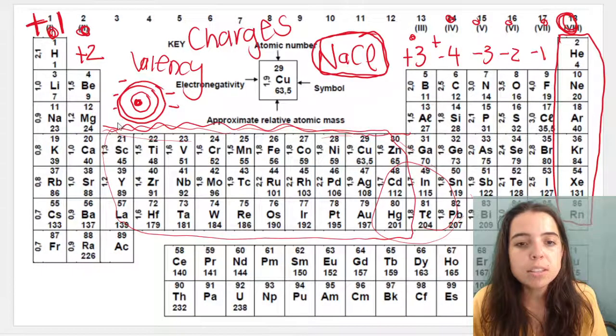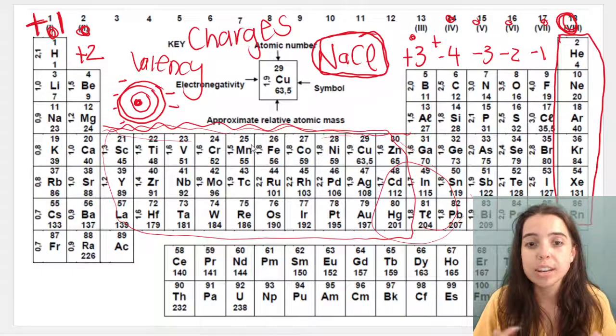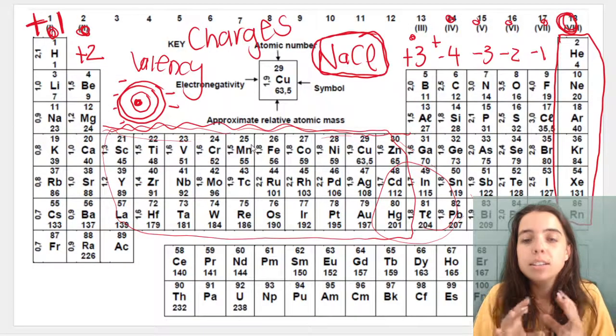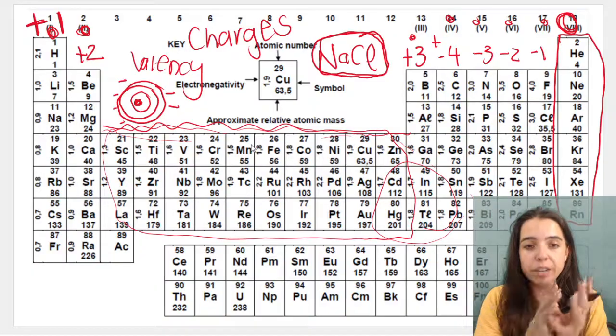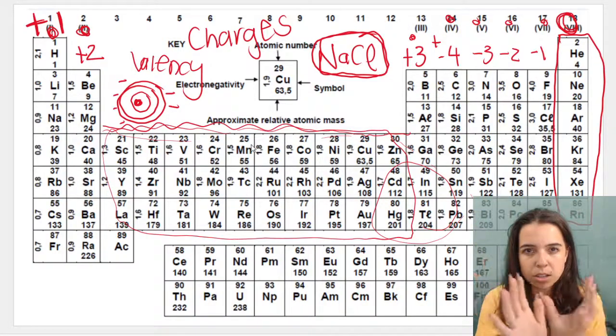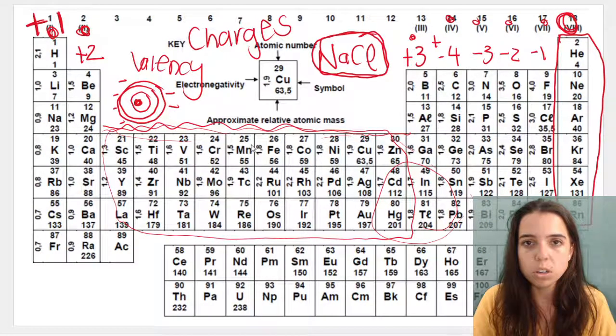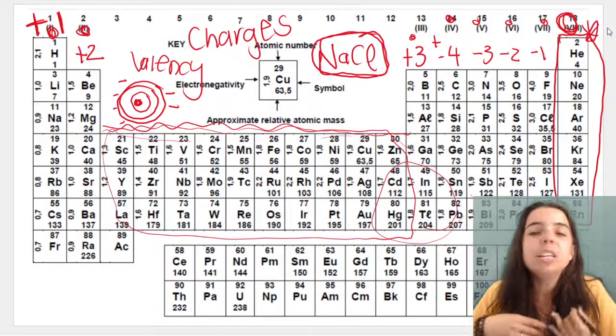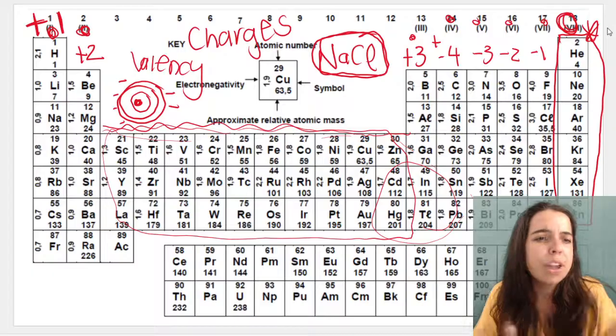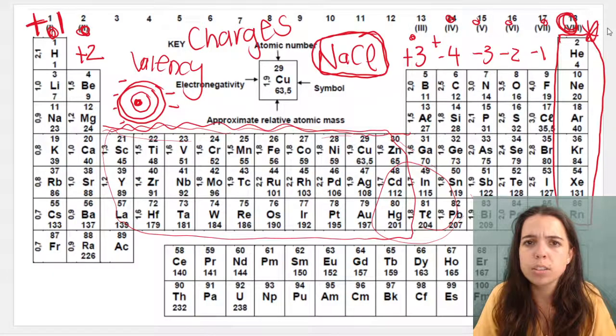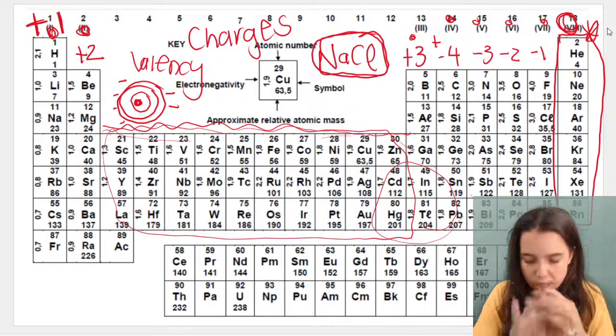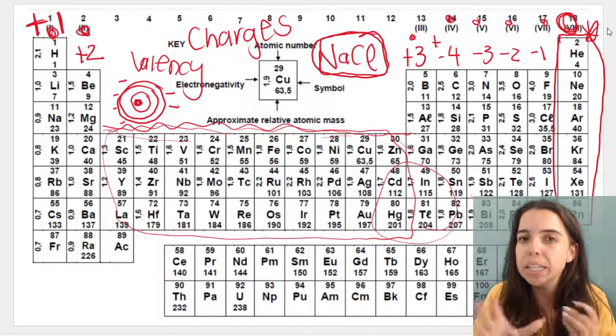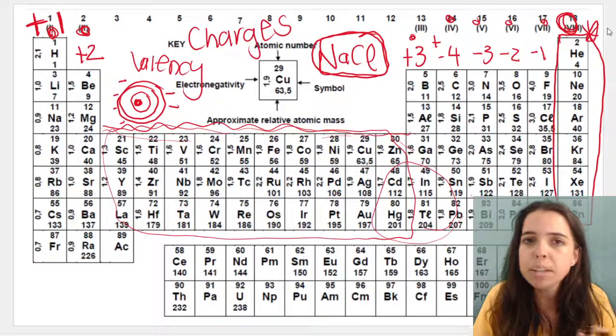Some elements contain more electrons than others. Some their outer energy levels, the one on the outside, is full. Those guys are called noble gases. They don't need to lose any electrons. They don't need to gain any electrons. Their outer orbitals, their outer energy levels, are full, which means they're chemically stable. That means they don't need to bond.